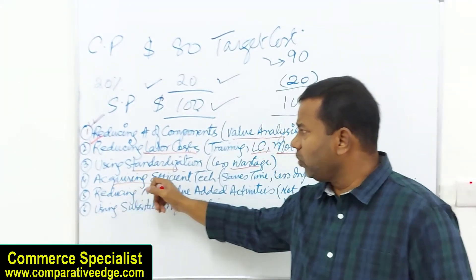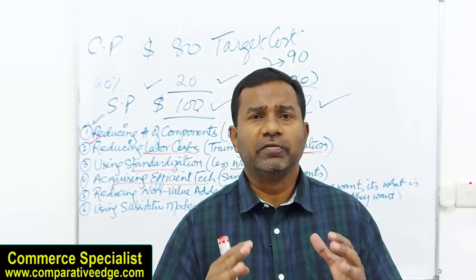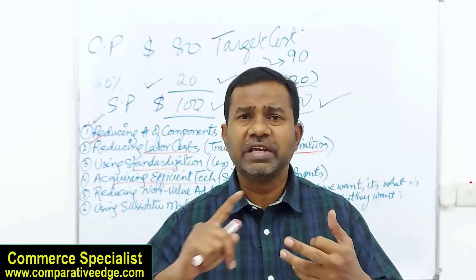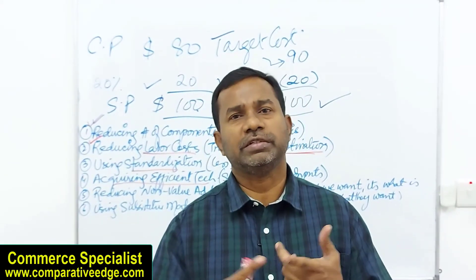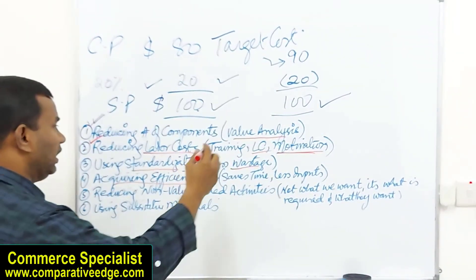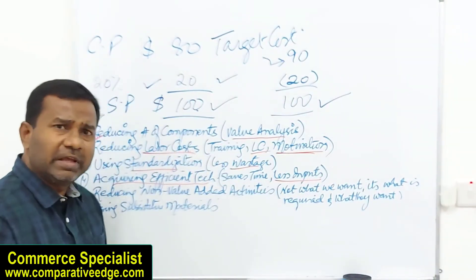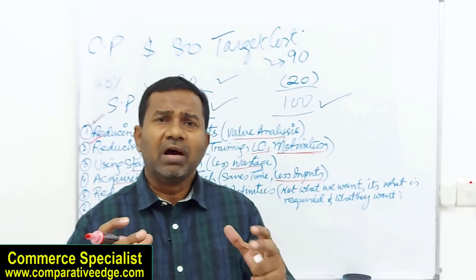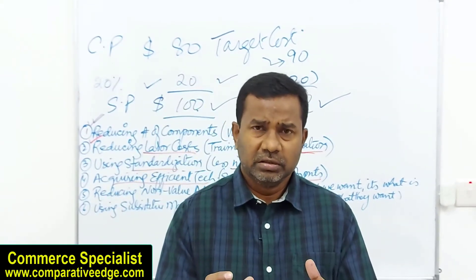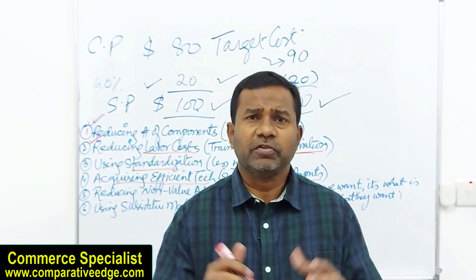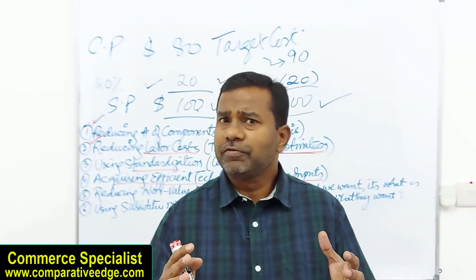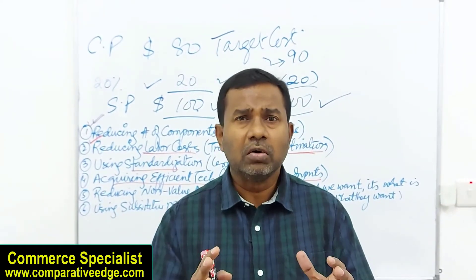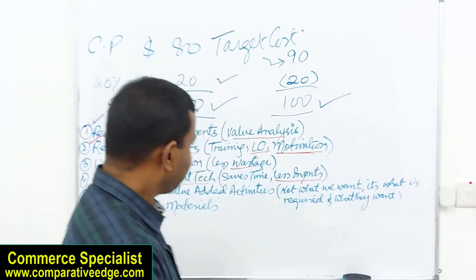The next important thing is acquiring efficient technology. We all need to invest in better equipment and machines — they are faster, more efficient, save time, and obviously save money. When we talk about efficient technology, we mean less inputs. There are machines that now work on AI — artificial intelligence — so you don't have to instruct them every time. Otherwise, you need a worker to supervise, which adds to labor cost. Investing in technology ultimately reduces your labor cost.